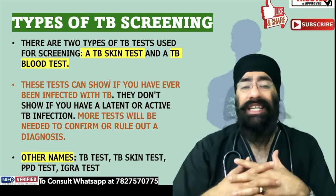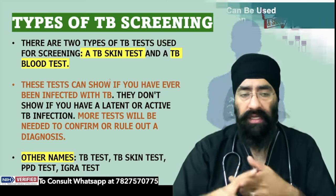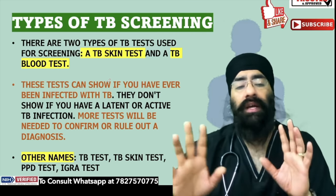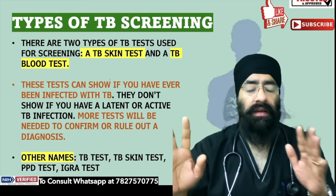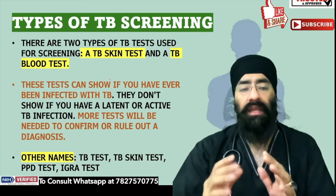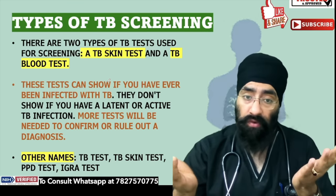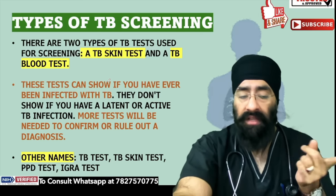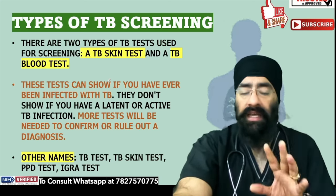Iske liye sabse basic cheez hoti hai screening test. Screening test ka kya matlab hai — kisi bhi general population ko screen karein. Ek hota hai TB skin test, ek hota hai blood test. Skin test aur blood test yeh batata hai ki aapko aaj tak kabhi bhi zindagi mein TB se infection hua hai ki nahi hua. Agar aapko kabhi latent tuberculosis hua hai ya active tuberculosis hua hai — yeh kabhi nahi batayega ki latent hua tha ki active hua tha. Yeh sirf itna batayega ki aapke andar TB ka bacteria kabhi gaya ki nahi gaya. Is test ko hum TB skin test, PPD test, ya IGRA test bhi bolte hain.